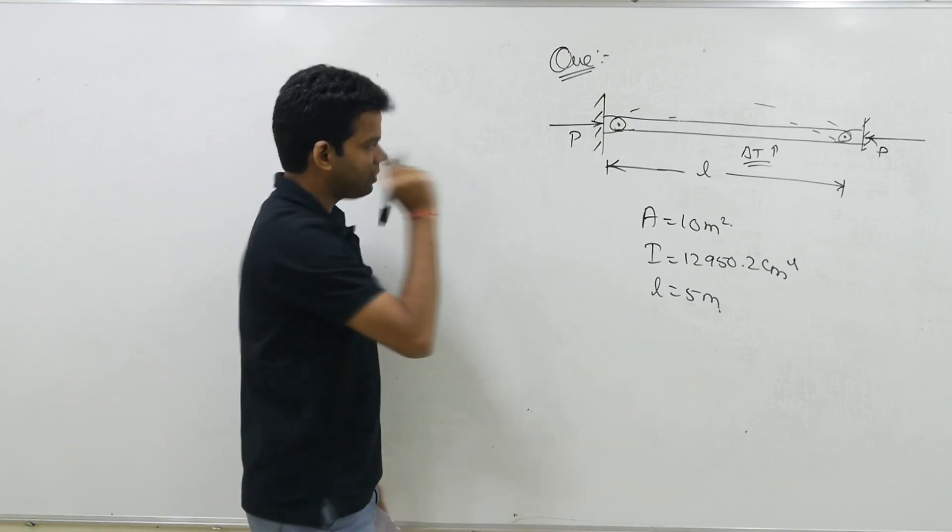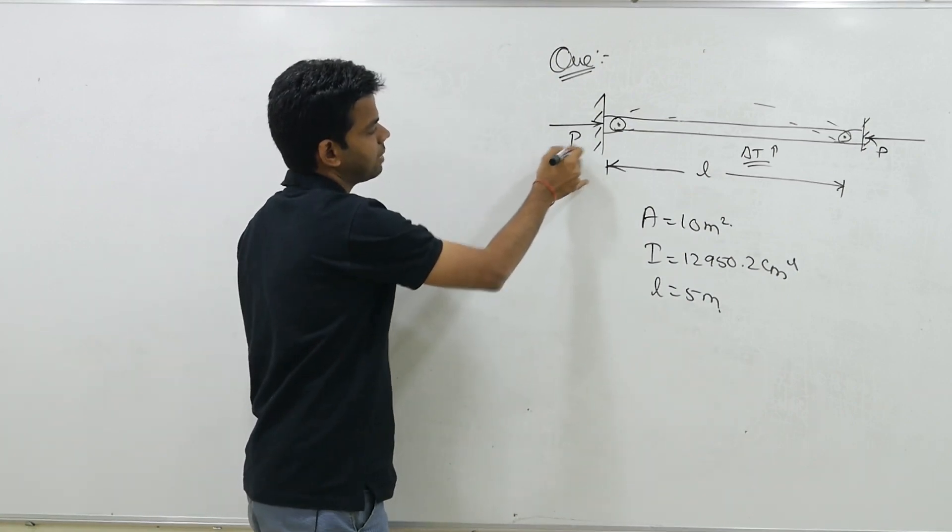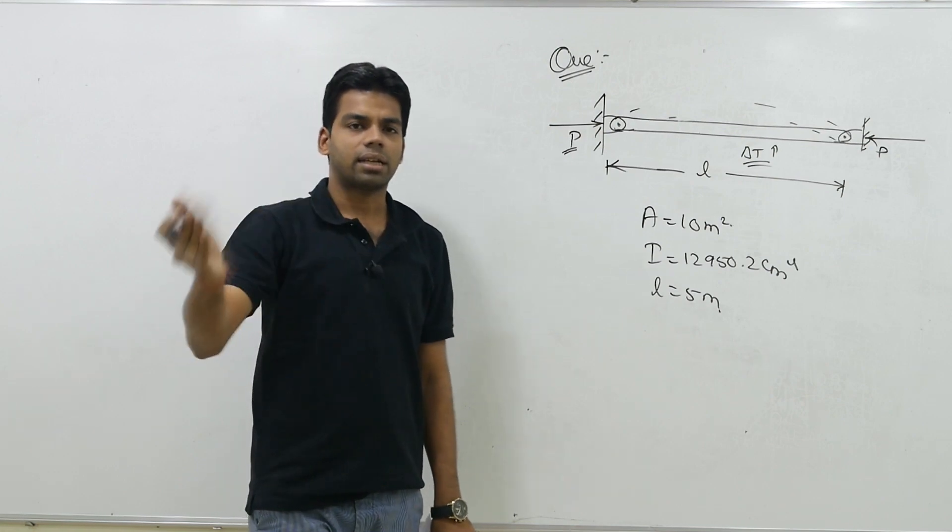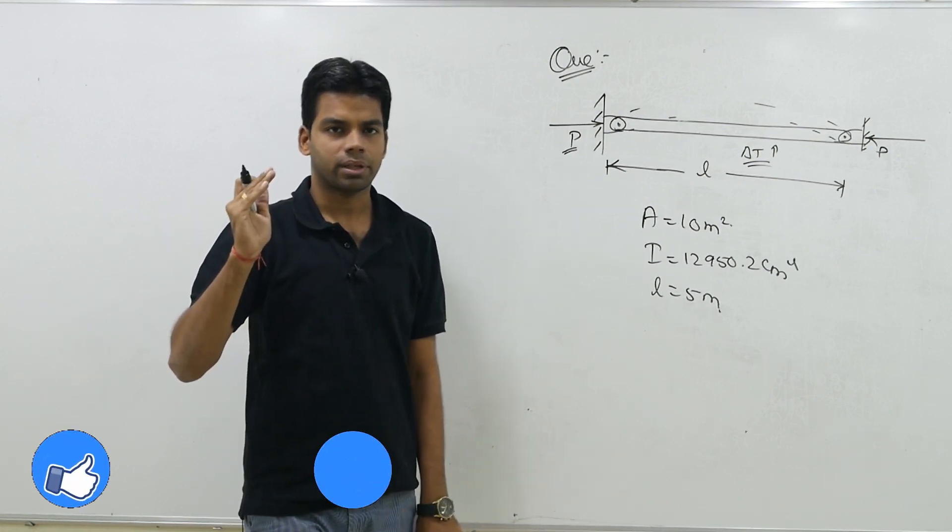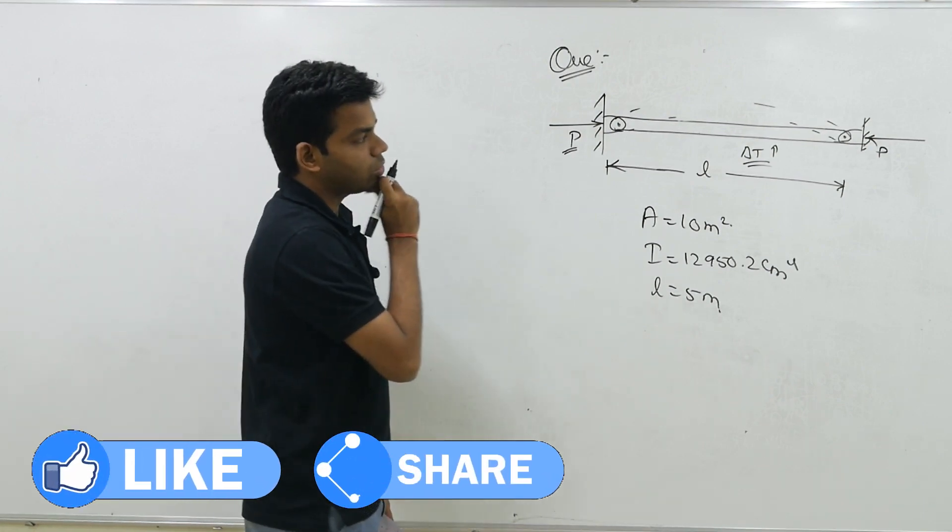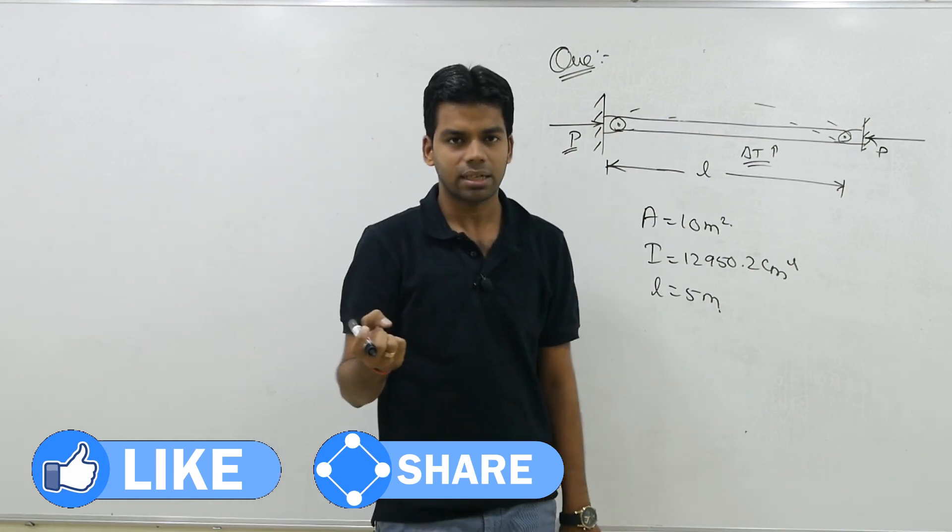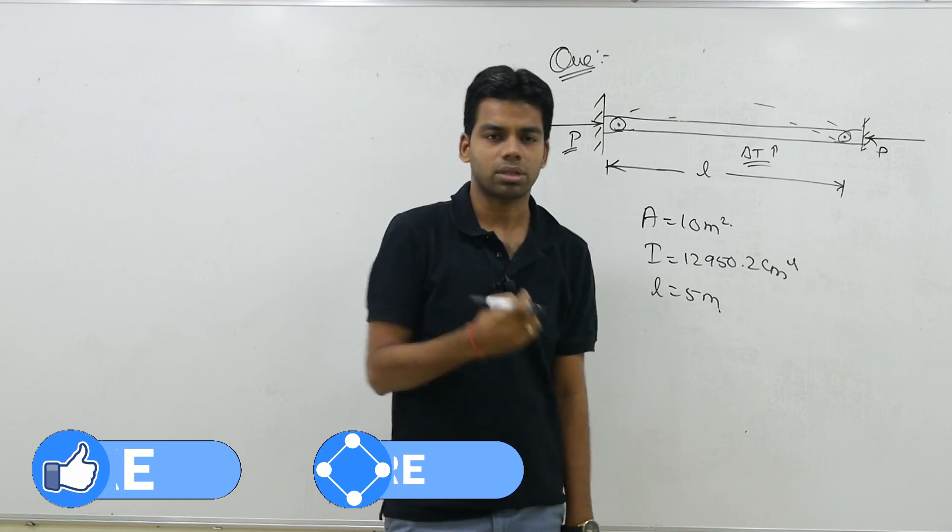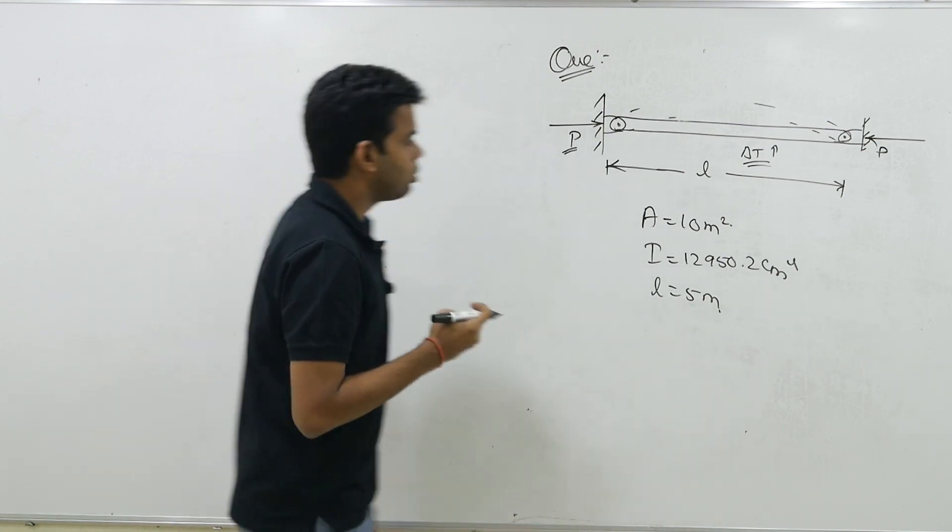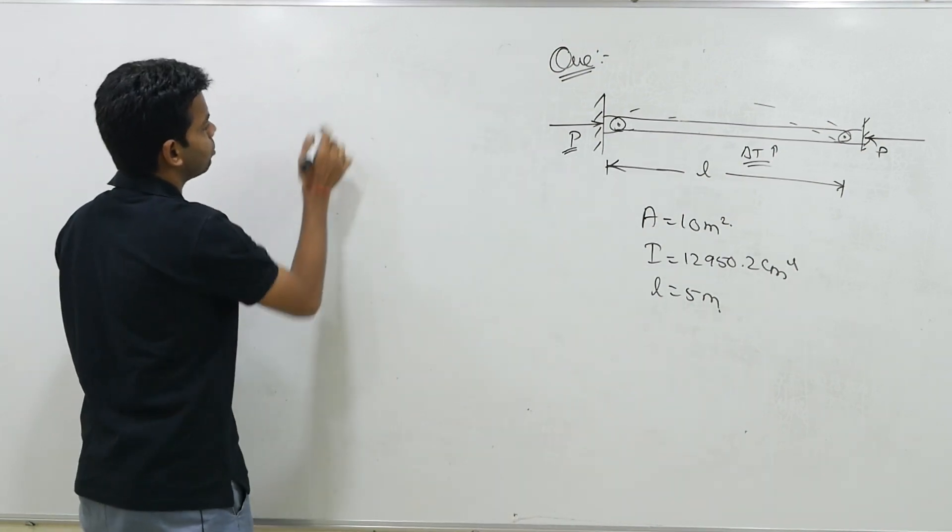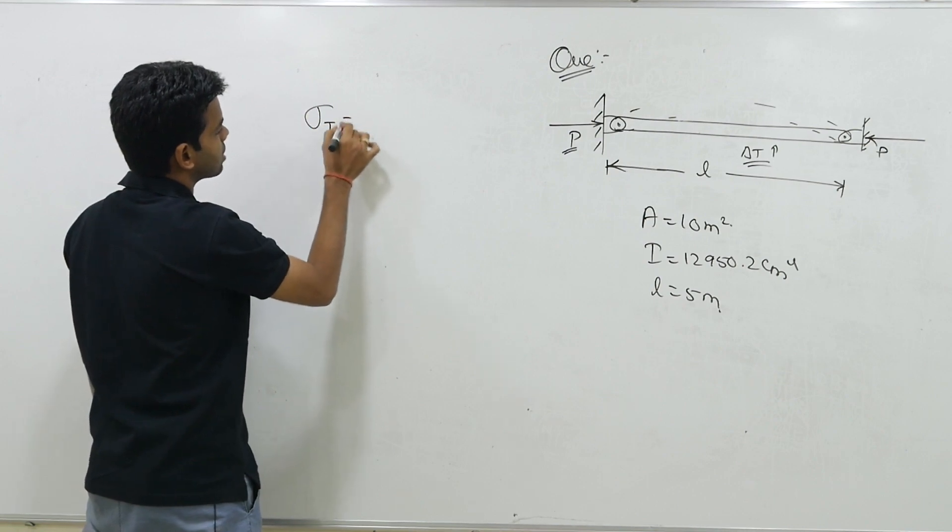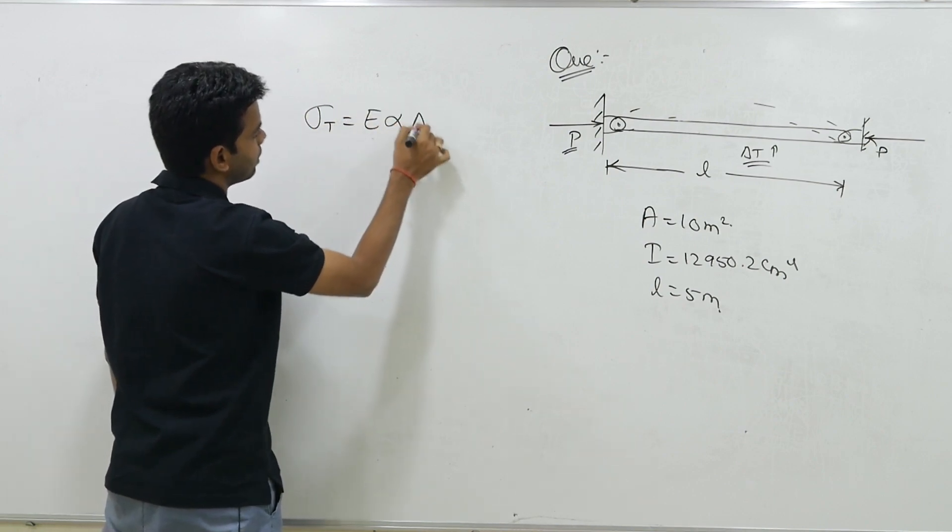To karna kya hai? Simply we have to determine the value of this P. Ye P ki value humko dekhna hai kitna aayegi, aur usko equate karna hai buckling load ke. Acha ye P ki value kitna hoga? Now this is the thermal, this is the force developed because of the temperature increase. Thermal stress ke karan force develop ho raha hai. And what is the value of thermal stress? Thermal stress ki value kitni hoti hai? We know the value of thermal stress is E alpha del t.